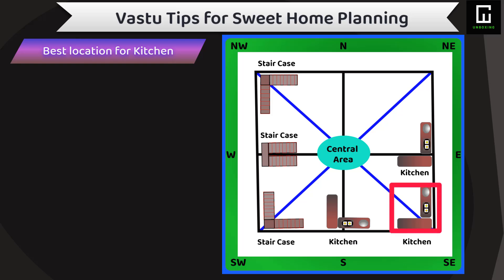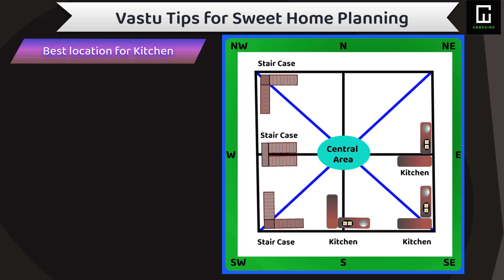According to Vastu Shastra, the Lord of fire Agni prevails in the southeast direction of the home, which means the ideal placement for the kitchen is the southeast direction of your house. We believe that due to the rising of the Sun in the east direction and heading towards the west crossing the south direction, the daylight coming from the Sun can kill the bacteria which grows in the kitchen, so this is hygienic also. But if for any reason you are unable to do so, the east and south direction will work as good locations for your kitchen.